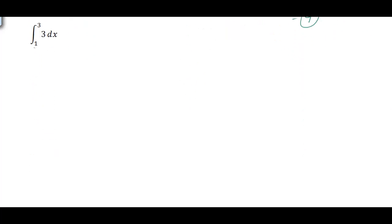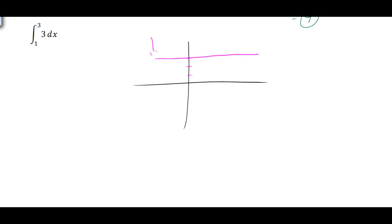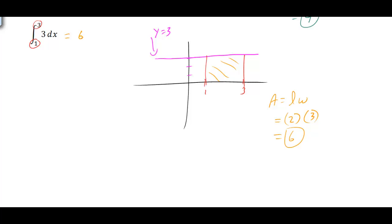Let's apply this to the integral from 1 to 3 of 3 dx. Our function is 3, so y equals 3 is a horizontal line at height 3. Looking at our limits from 1 to 3, the region is simply a rectangle. The area is length times width: 3 minus 1 equals 2 for the width, times the height of 3, giving an area of 6. So this integral equals 6.